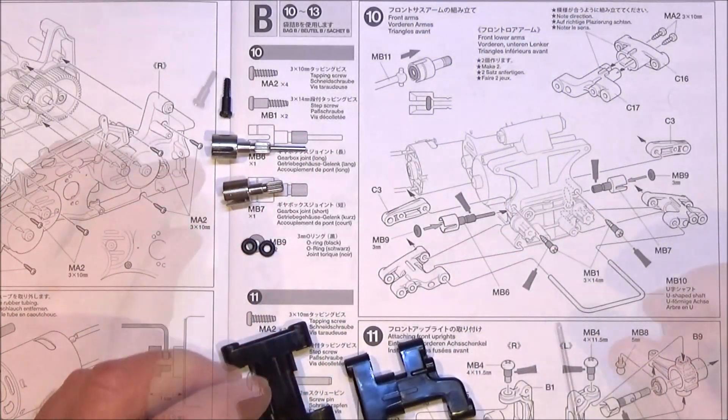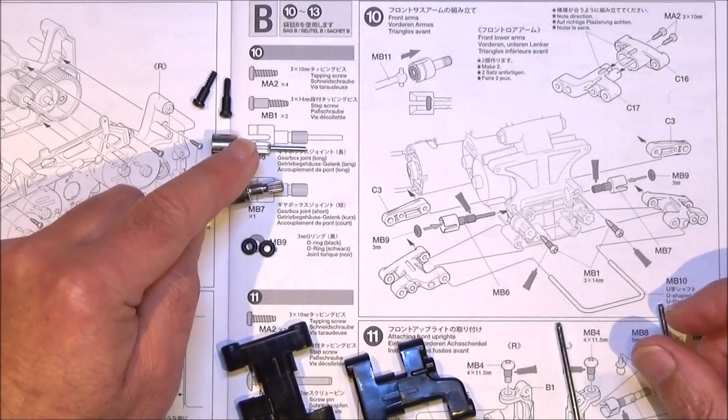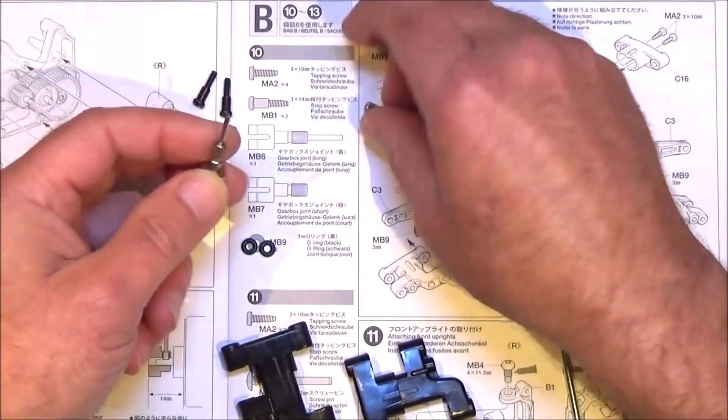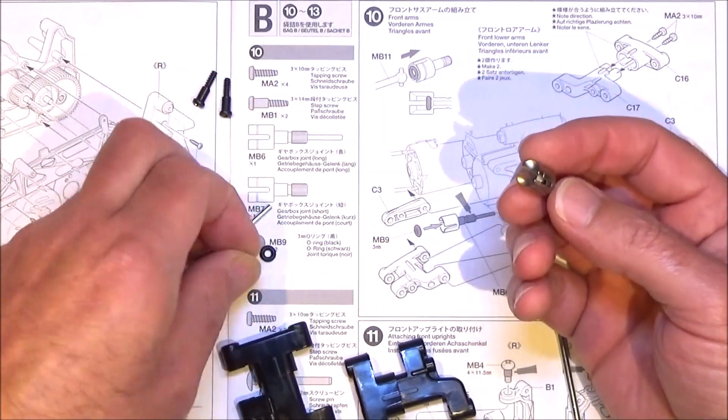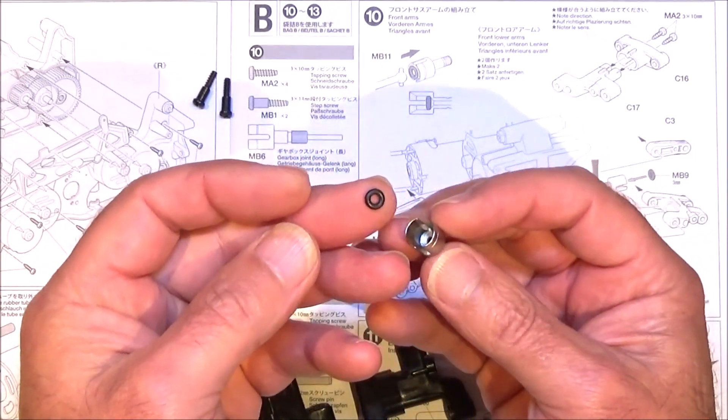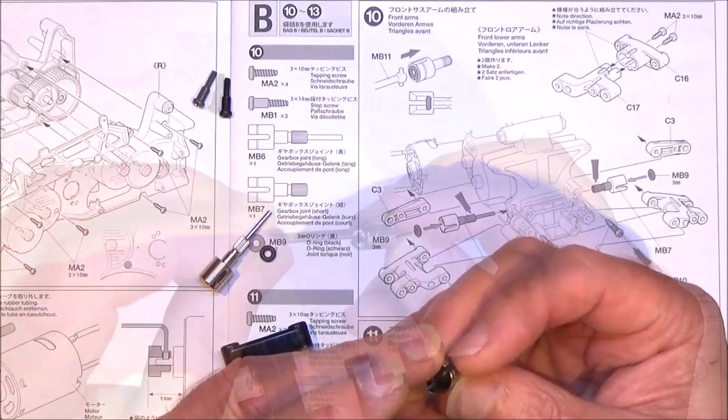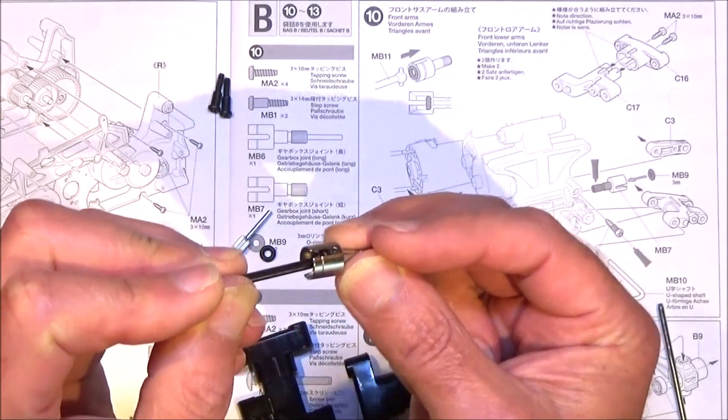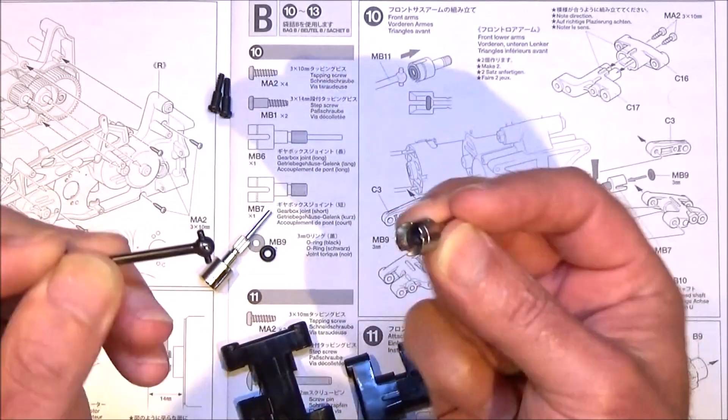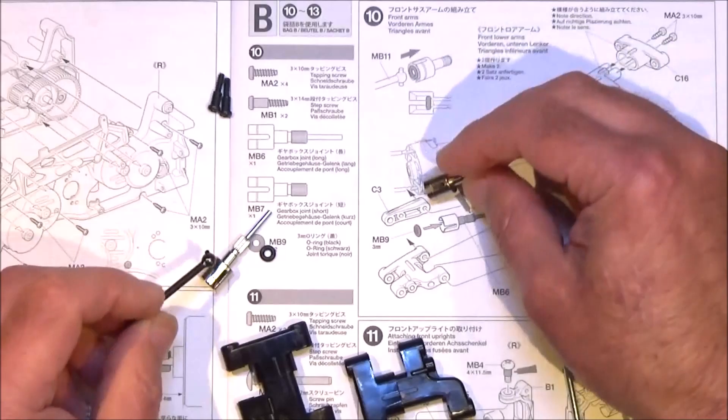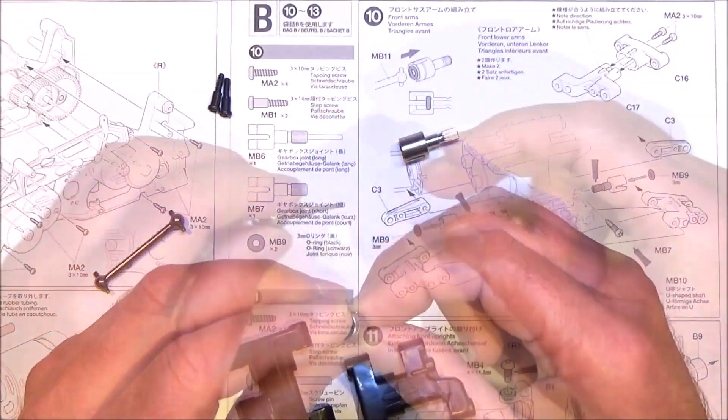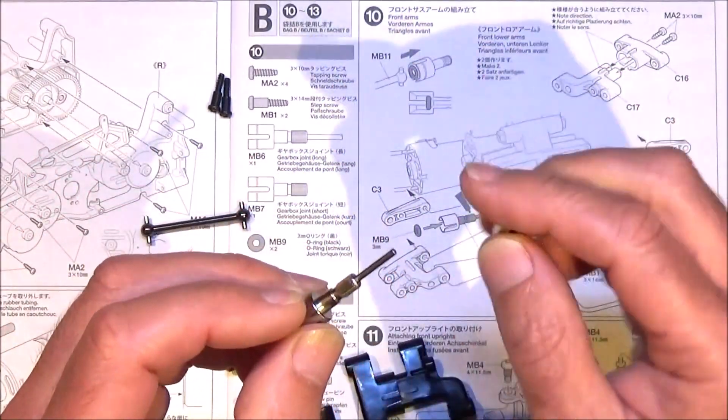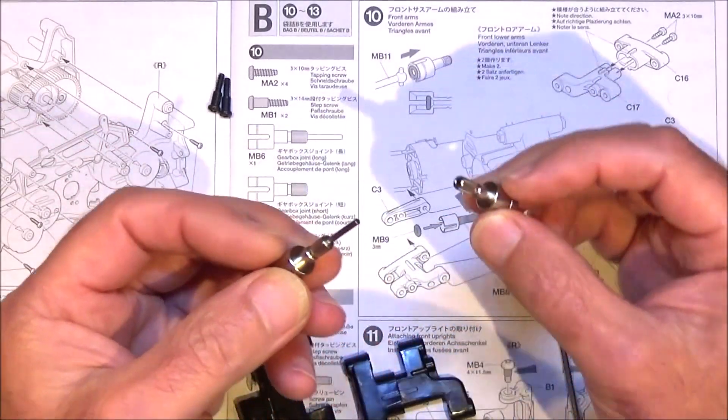With the two made up, you want to get your two gearbox joints - the long one and the shorter one. You just need to put the black o-rings into those. It's always useful to use one of your dog bones and give it a good push down to make sure it's seated in the bottom. Now put a bit of grease onto these parts that are going to go into the gearbox.